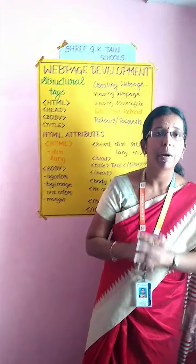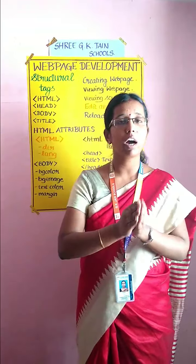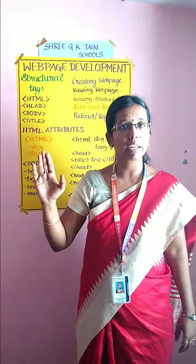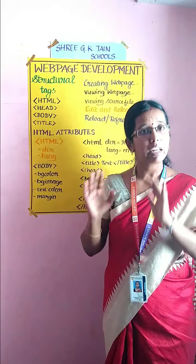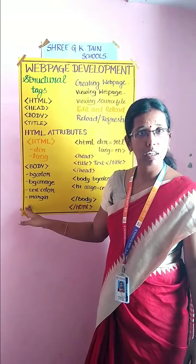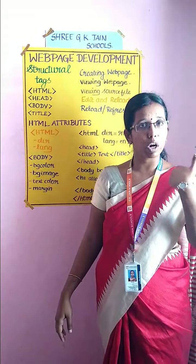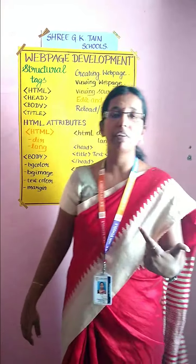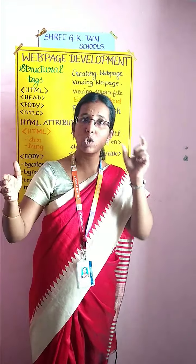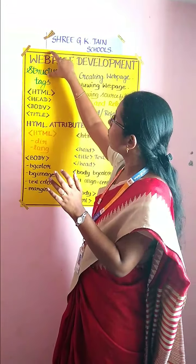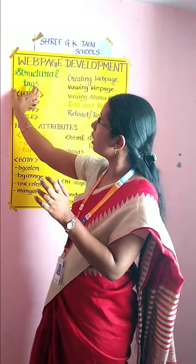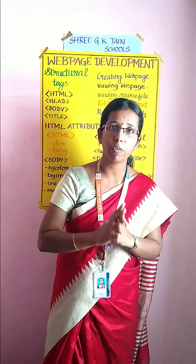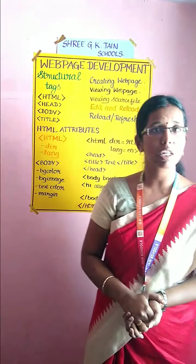The last body attribute is margin. Margin is nothing but if you want to display your document in the browser with some margin gap, you have to mention that space in the margin. By default, it will be aligned with no margin. If you want to display your content with a margin, you give it as body, space, margin — specifying the top margin and the right margin. Your document will then be displayed with margin-spaced content. These are the four attributes in your body tag.